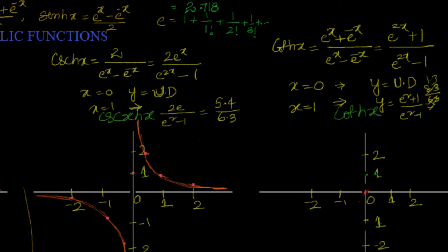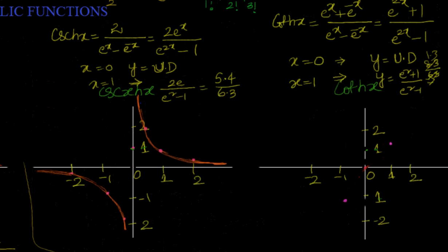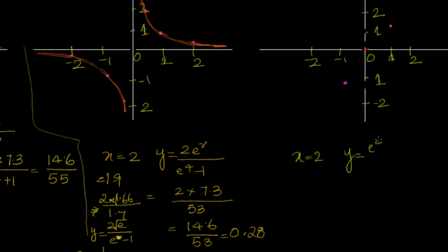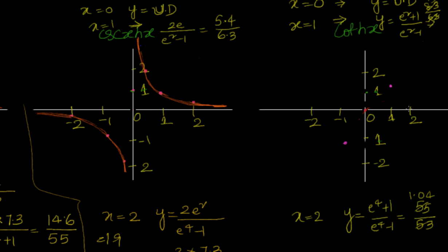For x equal to 1, y becomes (e^2 + 1) by (e^2 - 1), which is 8.3 divided by 6.3, approximately 1.3. For x equal to negative 1, y equals negative 1.3. For x equal to 2, y equals (e^4 + 1) by (e^4 - 1), which is 55 by 53, approximately 1.04 — moving towards 1.